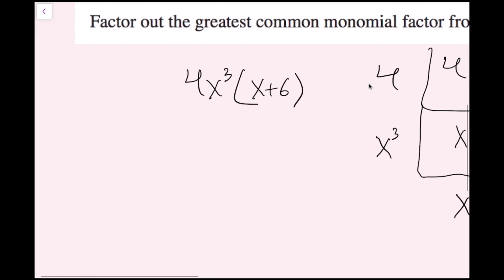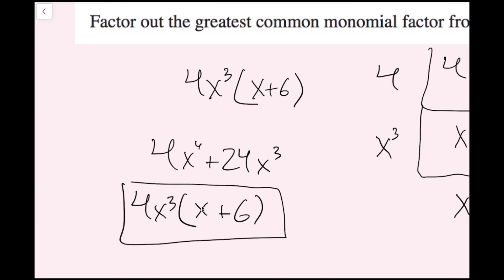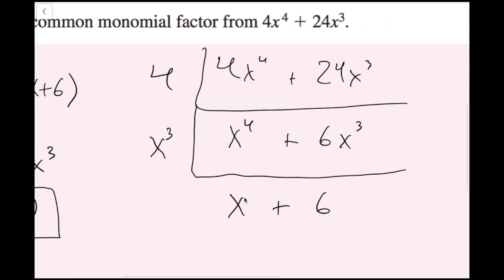Without the ladder: for 4x to the fourth plus 24x cubed, I look at each term. The number GCF is 4, and the variable GCF is x cubed since that's the lower exponent. I factor out 4x cubed. Then 4x cubed times x equals 4x to the fourth, and 4x cubed times 6 equals 24x cubed. So the answer is 4x cubed times the quantity x plus 6. This quicker method gives the same result.